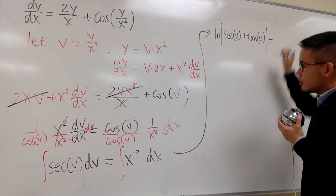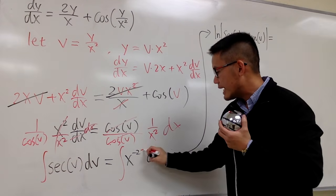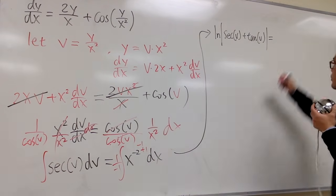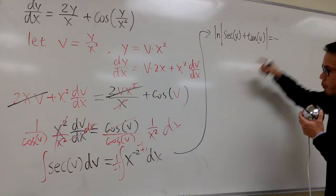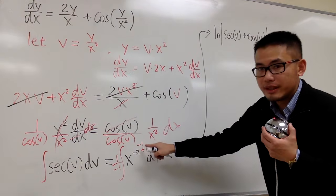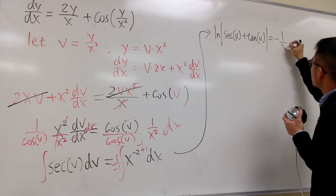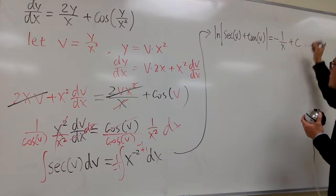And then this is going to be, integrate this, add 1 to the exponent, which is going to be negative 1, and we'll divide it by negative 1, right? So it's going to be negative x to the negative 1 power, so I'll put this as negative 1 over x, just like that. And don't forget, now I can put a plus c.